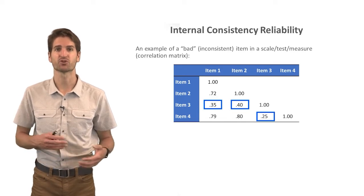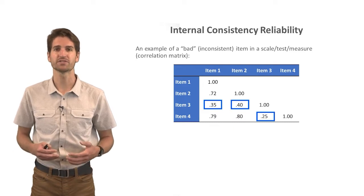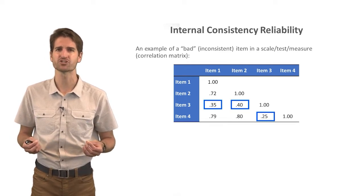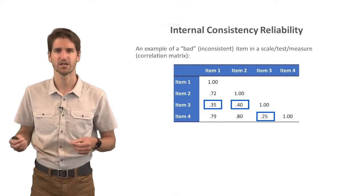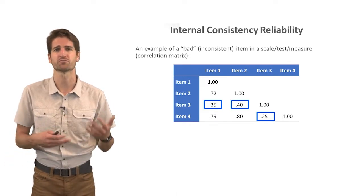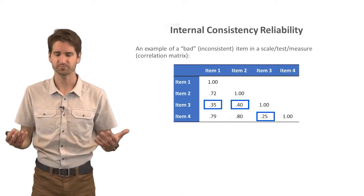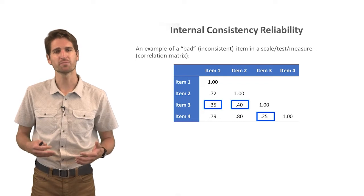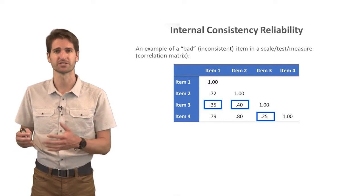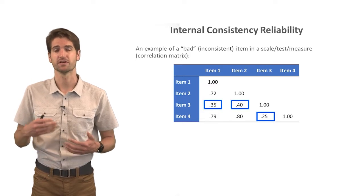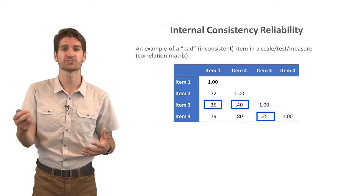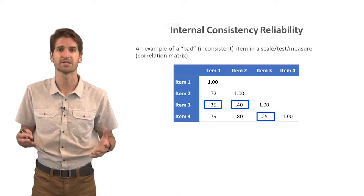The other items are correlated with each other at 0.72 or higher. This shows conceptually that there's something off about item three. These items are supposed to be measuring extraversion, but whatever item three is measuring doesn't seem consistent with what the other items are measuring because it's not as highly correlated — it could be measuring conscientiousness or some other personality dimension. This is what's conceptually happening with internal consistency reliability, and Cronbach's Alpha is a specific indicator commonly used in HR to assess the inter-correlations across all these different item scores.